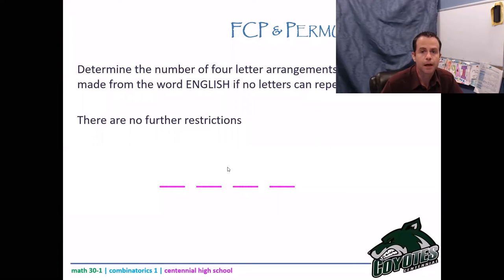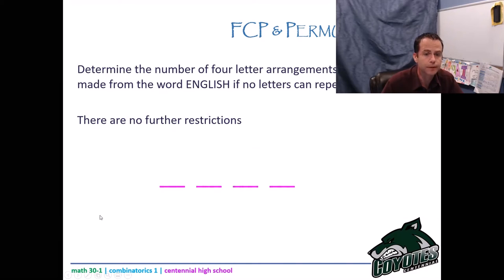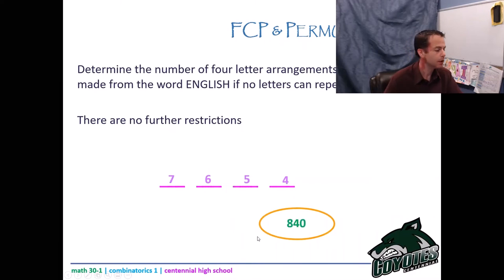So I'm looking at English — no letters can repeat, it's a four-letter arrangement. How many letters are in English? One, two, three, four, five, six, seven letters in English, which means I have seven options for the first spot, then six, then five, then four. Multiply all that together and I get 840.